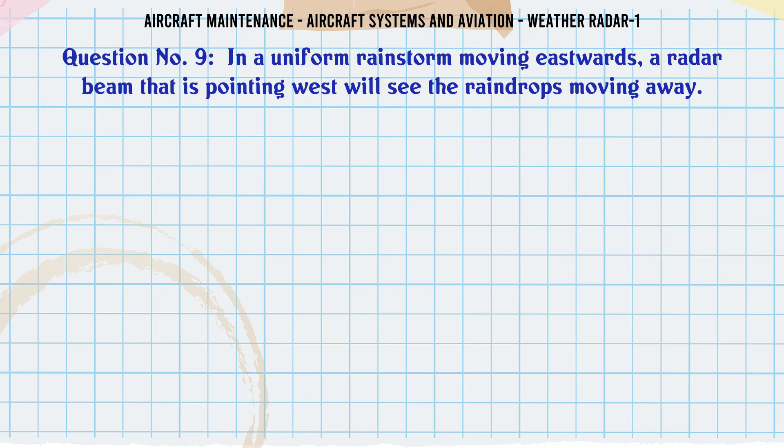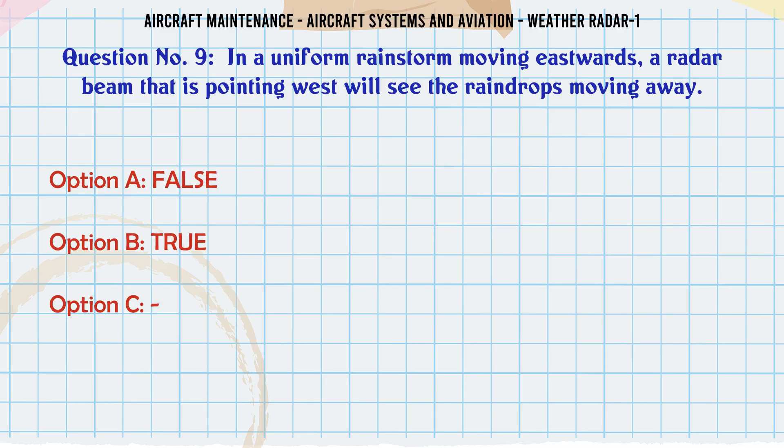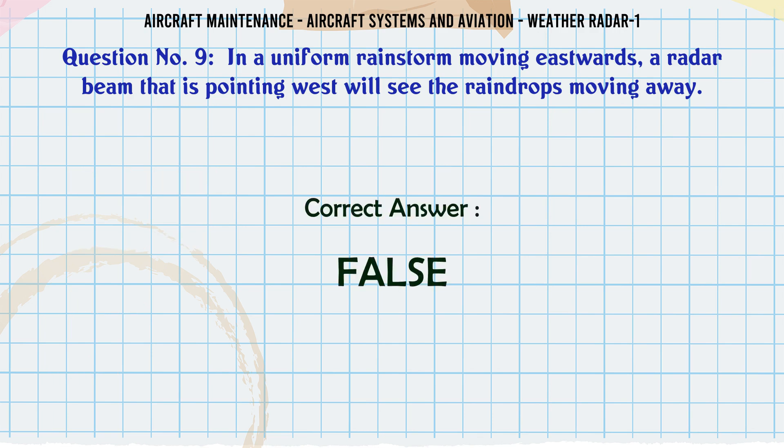In a uniform rainstorm moving eastwards, a radar beam that is pointing west will see the raindrops moving away. A: False. B: True. The correct answer is False.